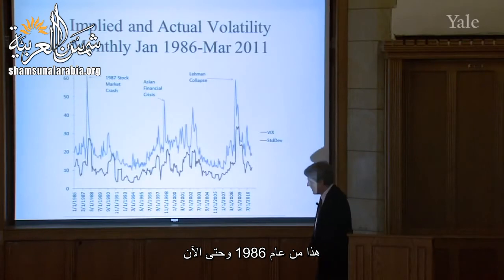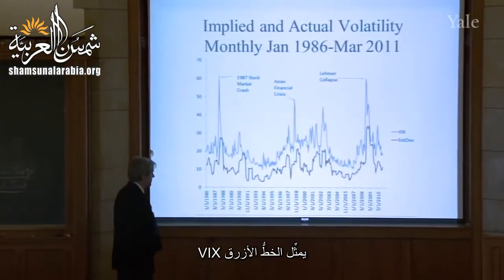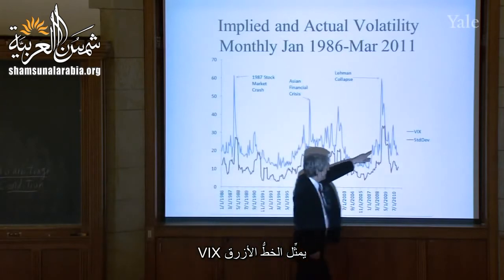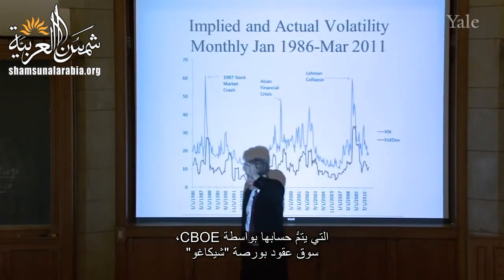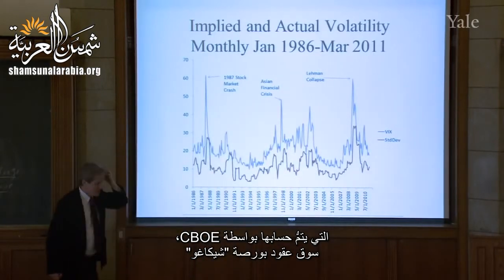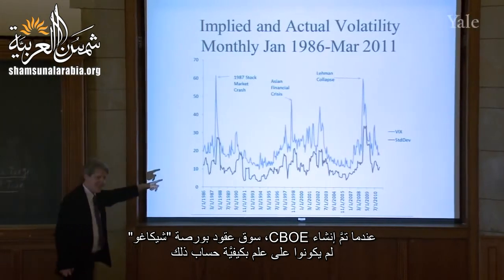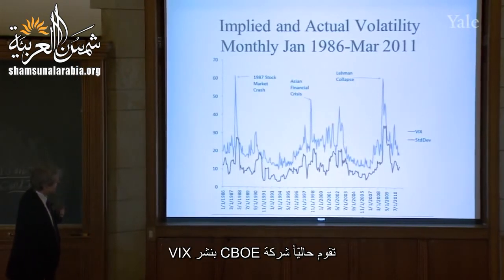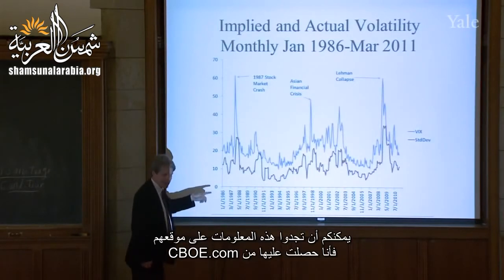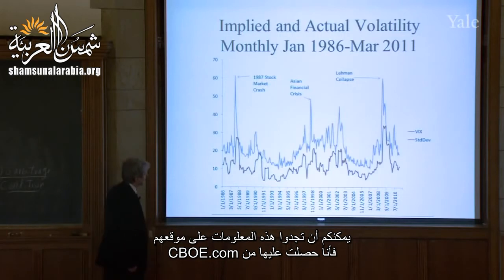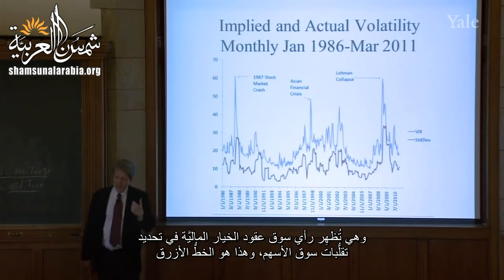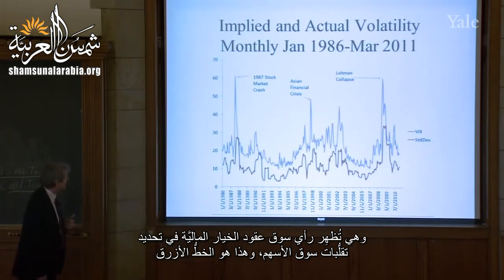I have a chart from 1986 to the present. The blue line is the VIX — computed by the Chicago Board Options Exchange based on the front-month option — representing what the options market thought the volatility of the stock market was. The orange line is the actual standard deviation of stock prices over the preceding year of monthly changes, annualized. That's actual past volatility. The VIX is in effect the market's expected standard deviation of the S&P 500 for one month, multiplied by the square root of 12 to annualize.